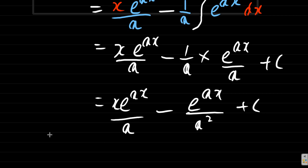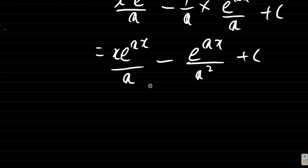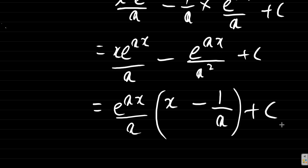Plus c. And then you can put the bracket and so on, clean it up, make it look neat. So e to the ax divided by a, open bracket, up top here you get x, minus, e to the ax into e to the ax, this would be 1 over a, plus c.